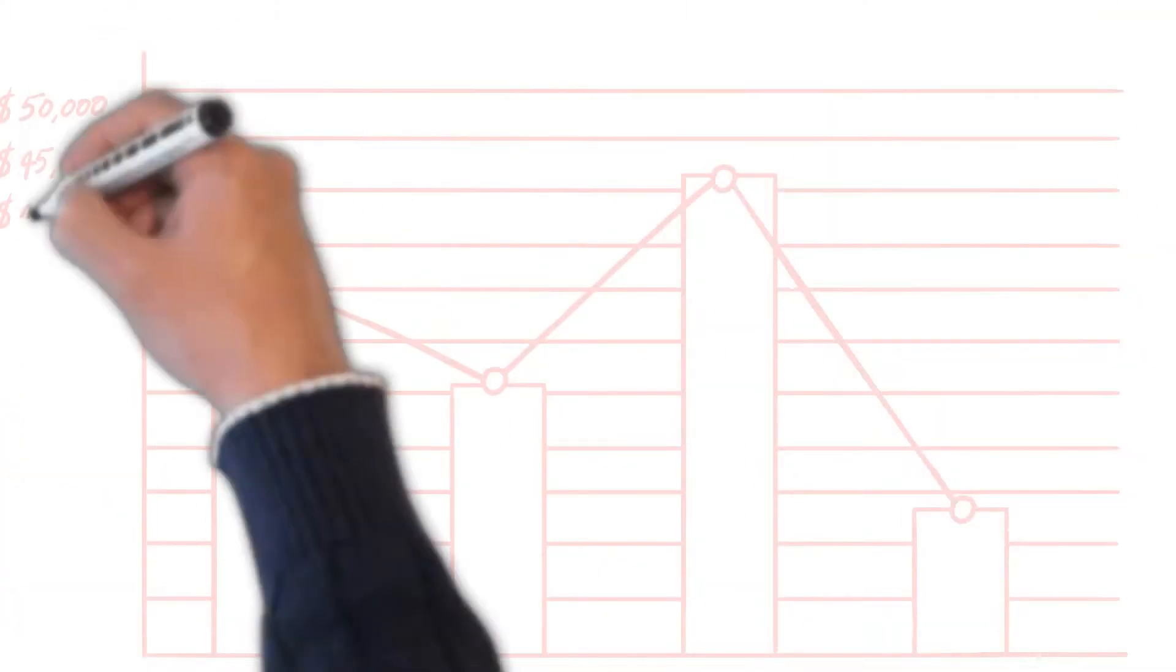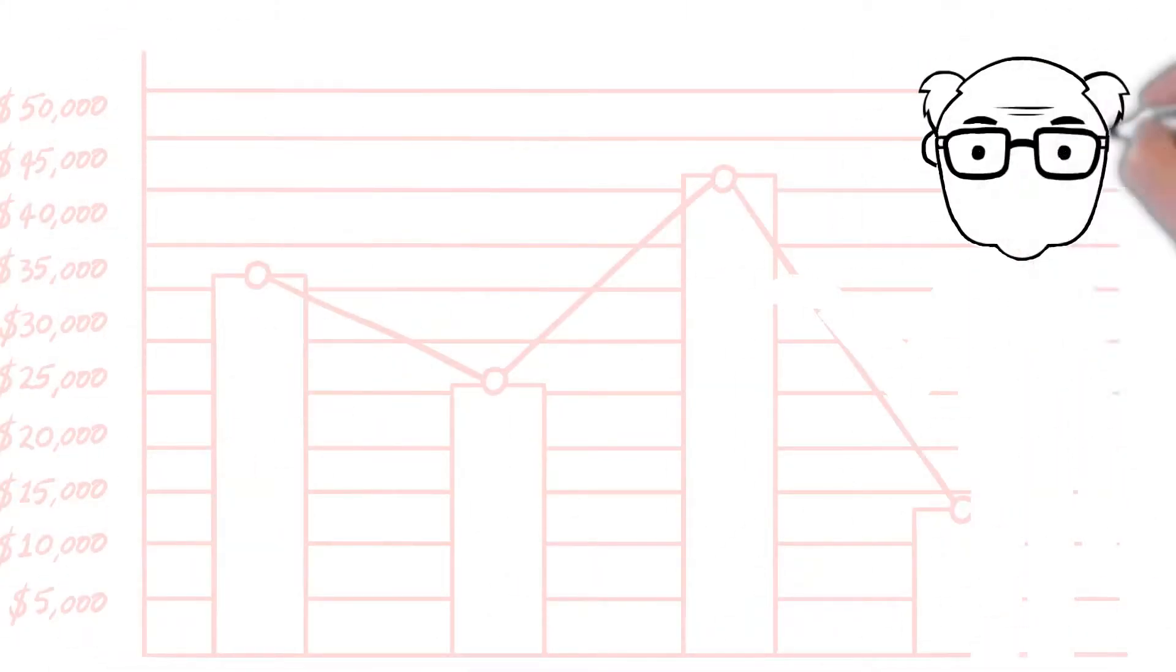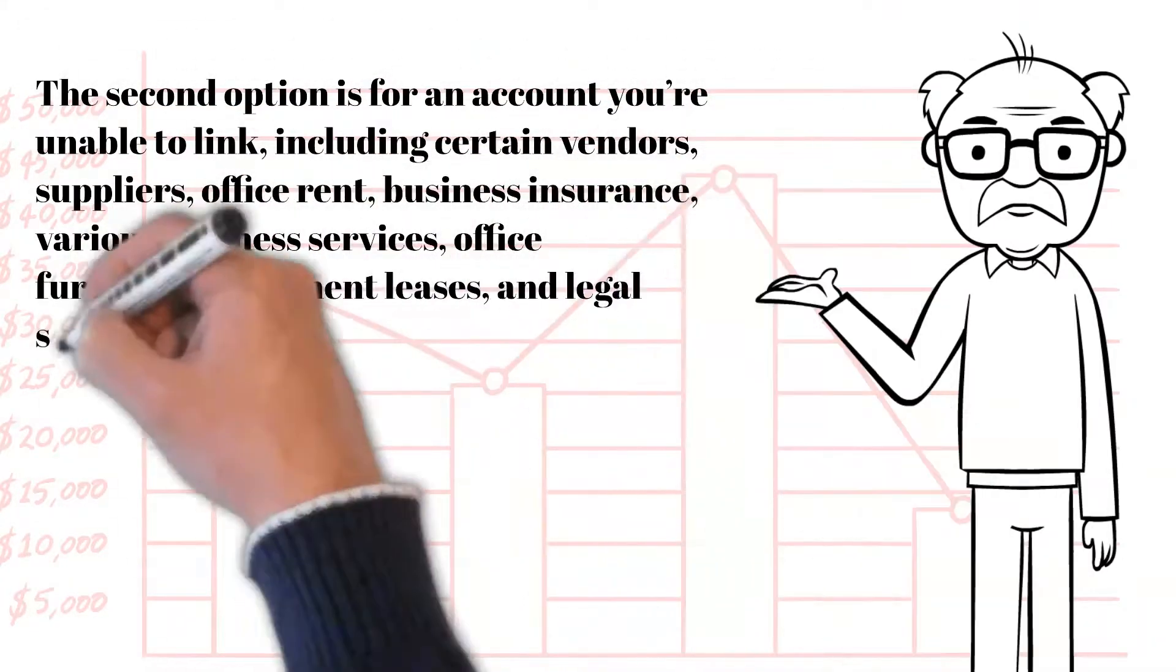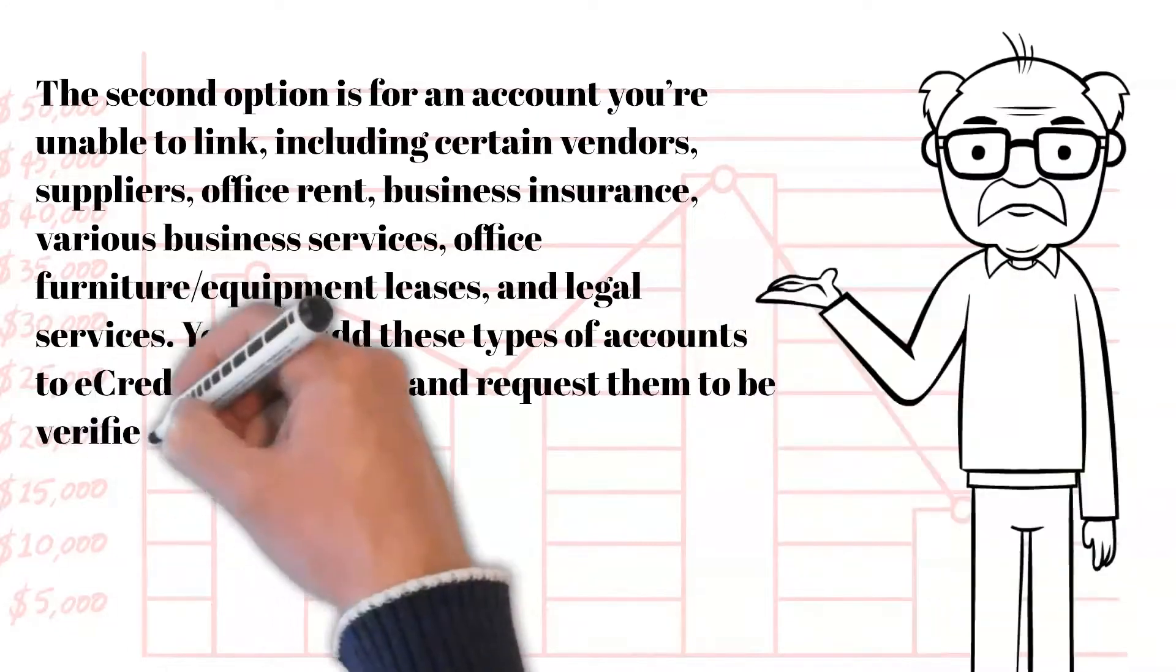The second option is for an account you're unable to link including certain vendor suppliers, office rent, business insurance, various business services, office furniture, equipment leases, and legal services.